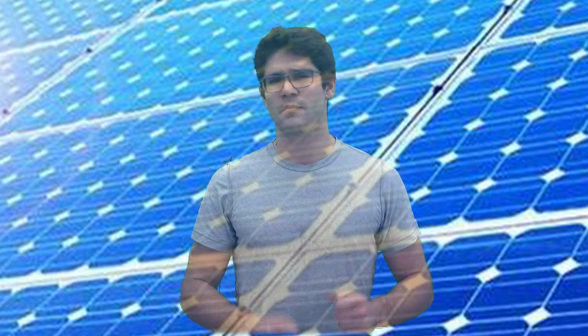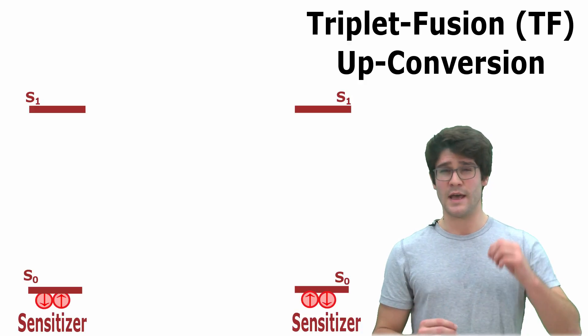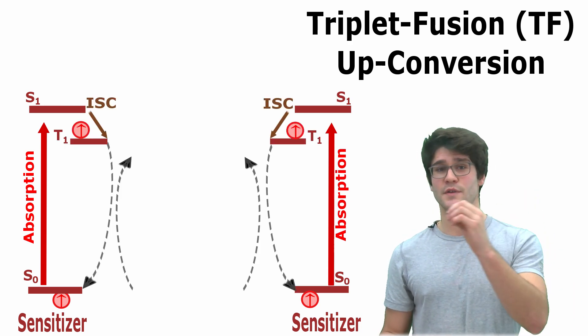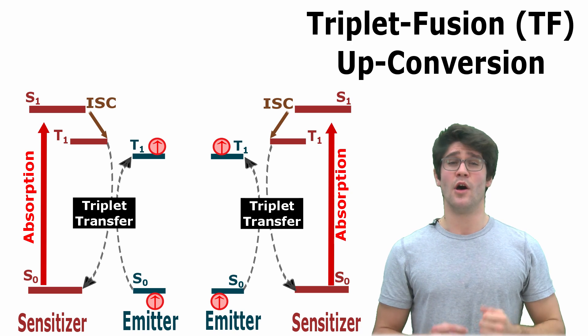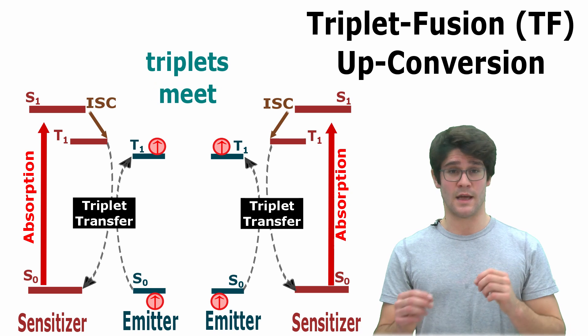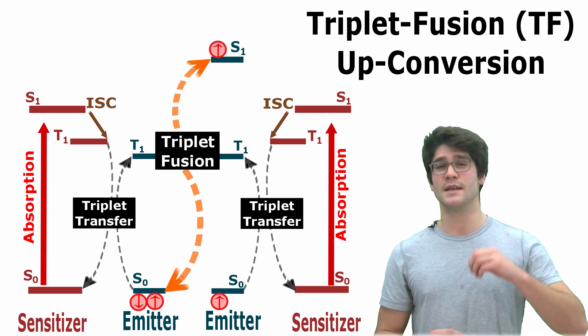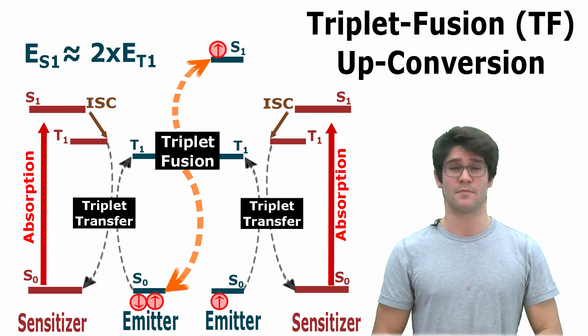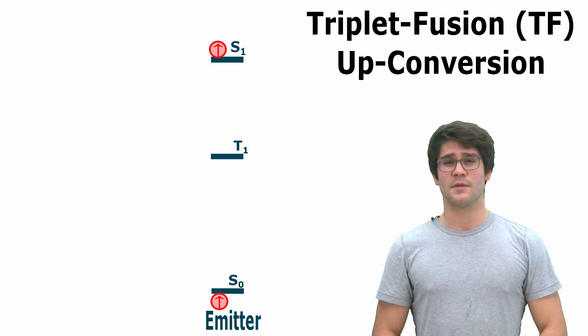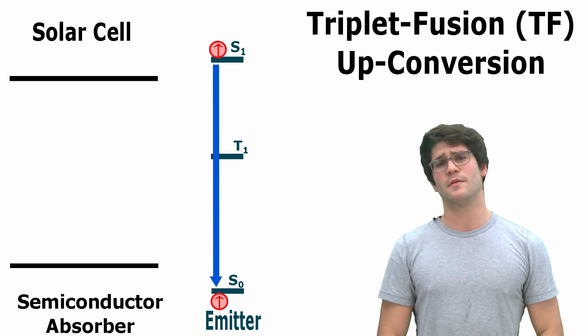Now back to triplet fusion. Low energy photons are absorbed in a sensitizer molecule, exciting a singlet state that quickly converts to a triplet. This is then transferred into a resonant triplet state of the neighboring emitter molecule. It diffuses in the medium until it meets another similar triplet, and both annihilate, generating a singlet state of twice their energy. This is an energy and spin conserving process. The final singlet must be near or above band gap energy for its photon to be absorbed back in the cell.